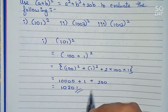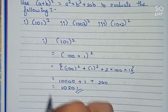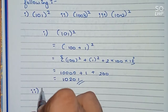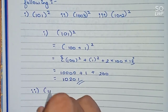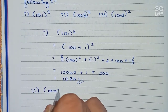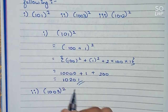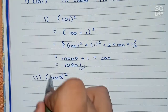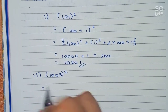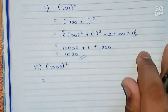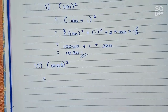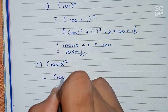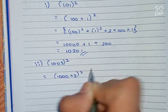So the result is 10,000 + 1 + 200 = 10,201. That is the final answer for question one. Now let's move on to question number two, which says 1003 whole square. We will handle this similarly, expressing it as 1000 + 3 whole square.